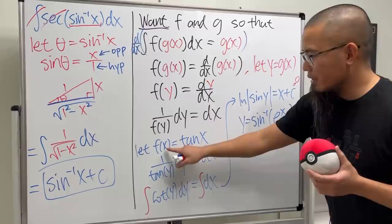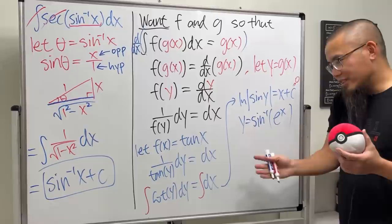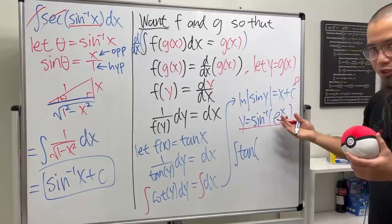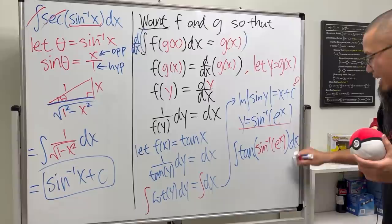Now I will put this back to here, back to here, and then back to the integral. So ladies and gentlemen, we will get the integral of tangent of this right here is for the g of x, which is inverse sine of e to the x.